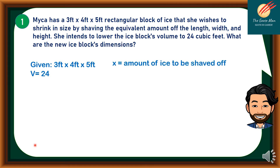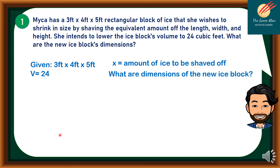We will let x as the amount of ice to be shaved off. We want to find out the dimensions of the new ice block. We will start with the original dimensions and deduct x on each dimension. So we have here (3 minus x) times (4 minus x) times (5 minus x).